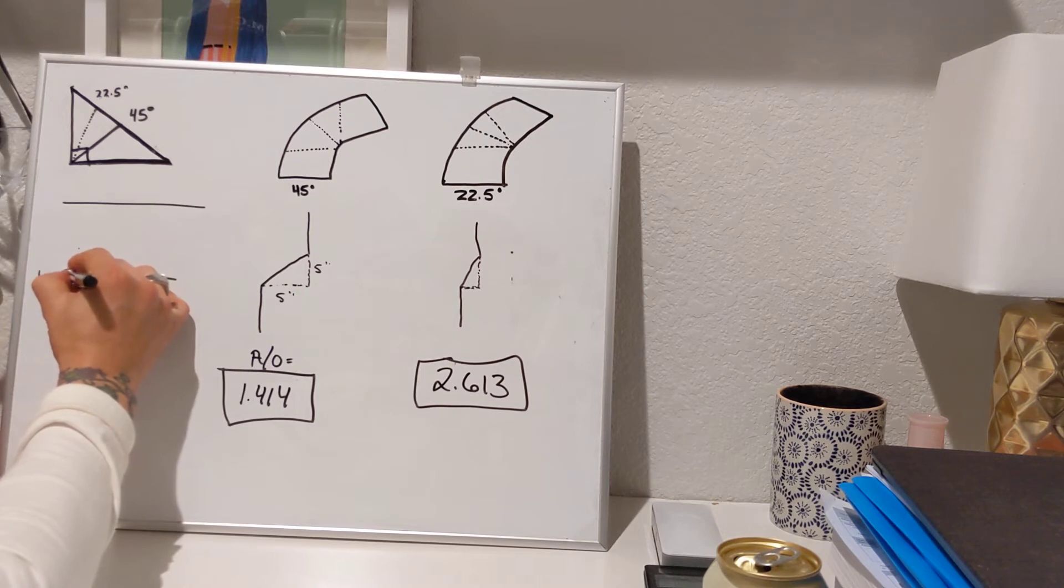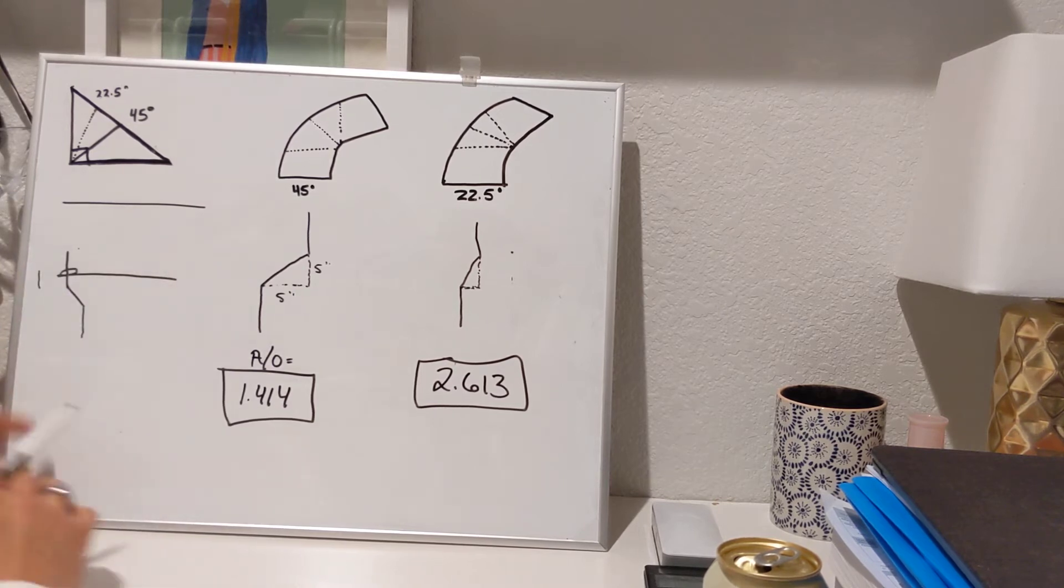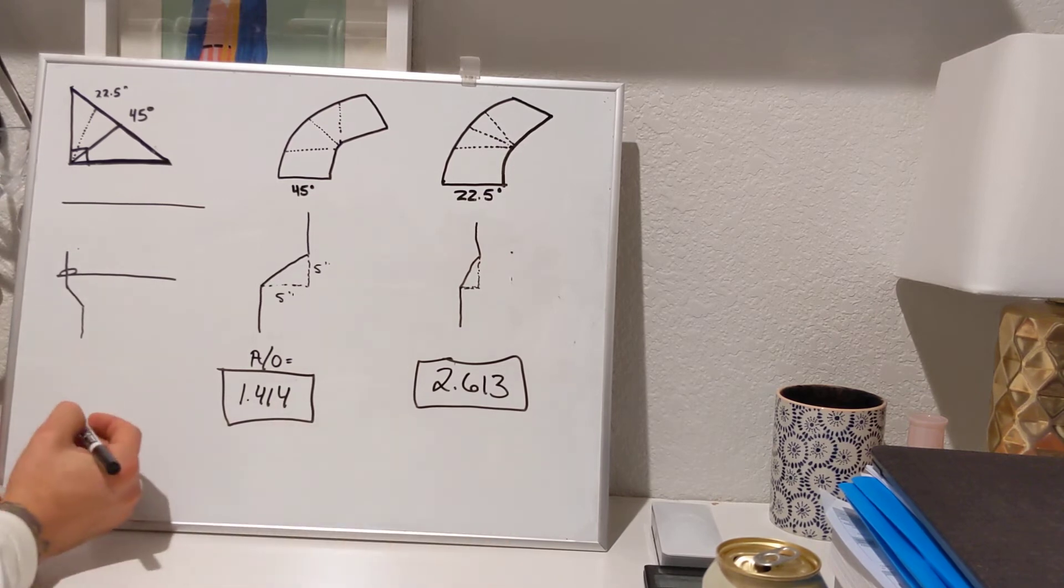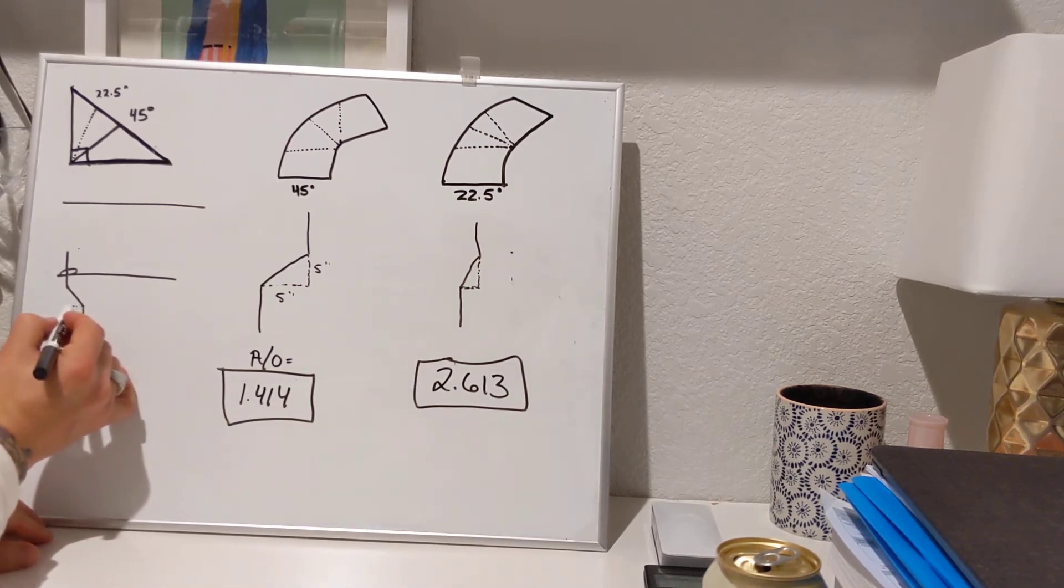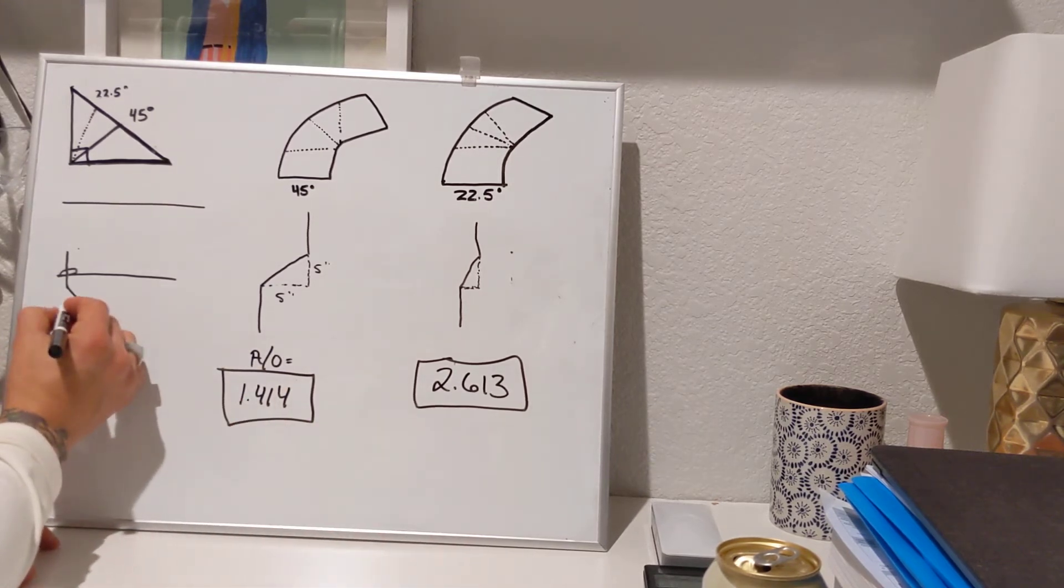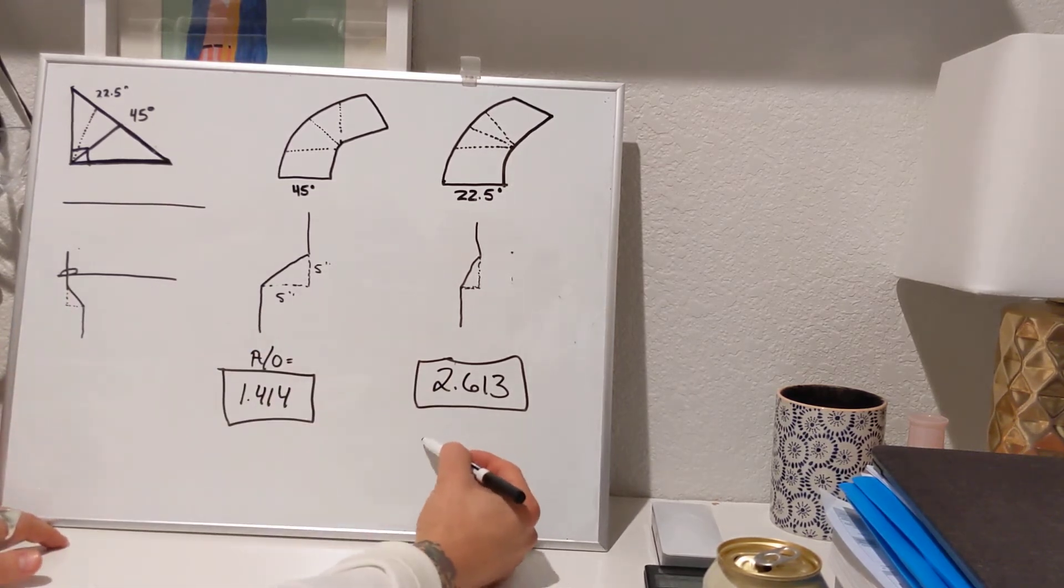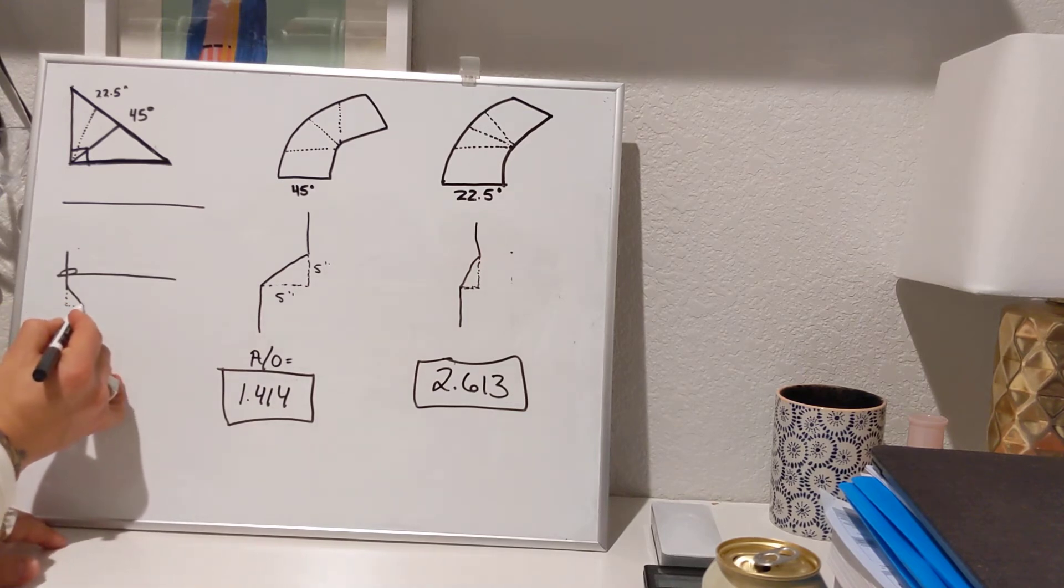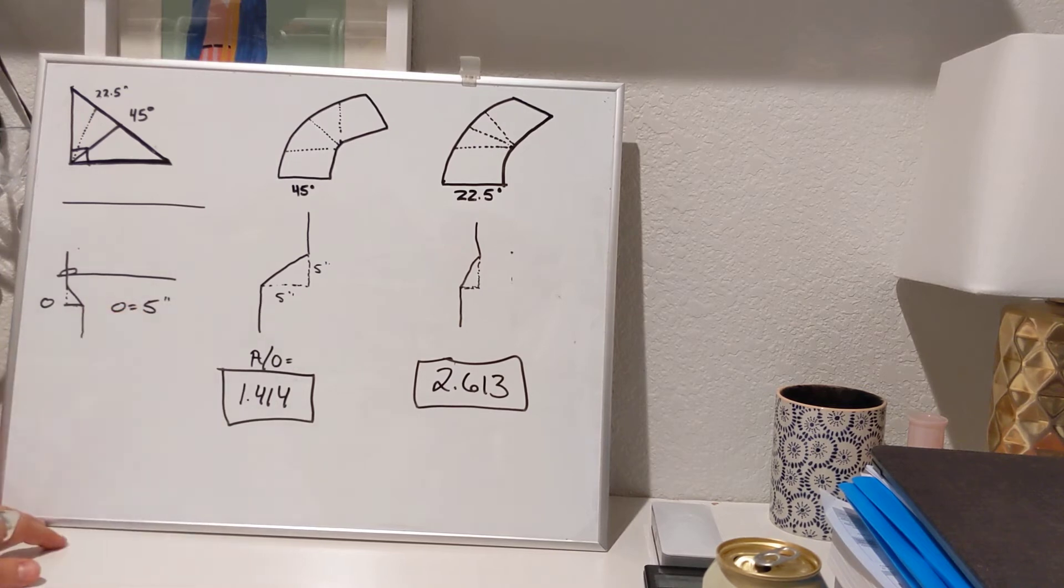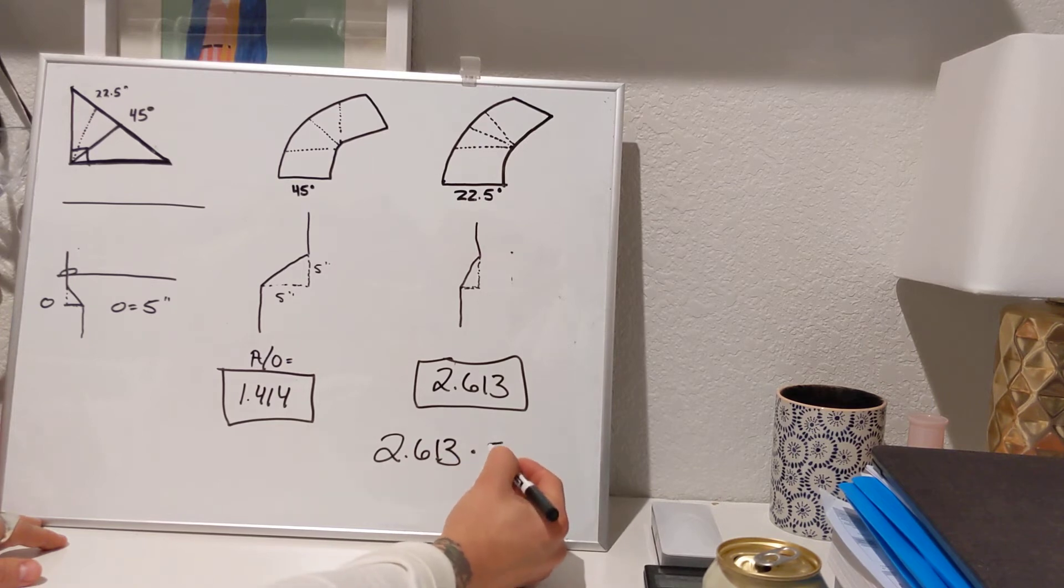The same principles apply in terms of you need to find out how far over you are. That's going to be your formula. So again, for the previous example, let's say your offset, which is going to be over here, this offset is equal to 5 inches. You're going to take 2.613 and multiply that by your offset.